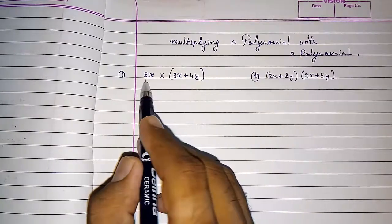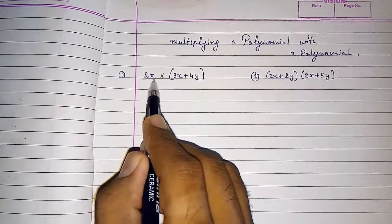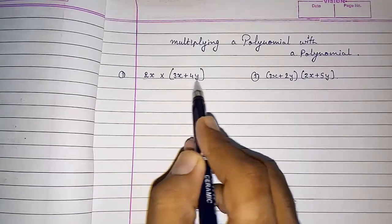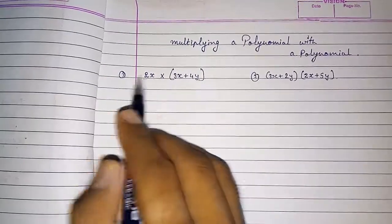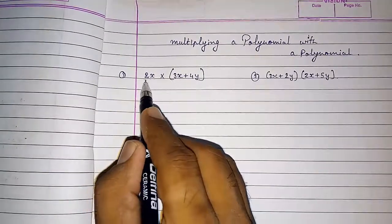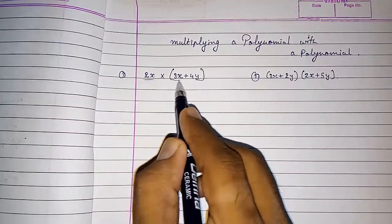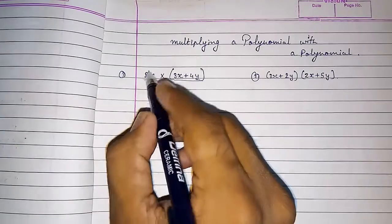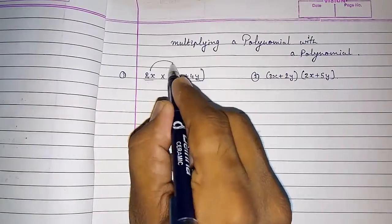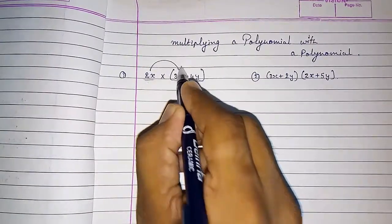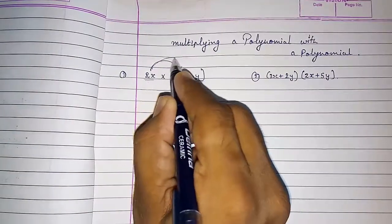Then I will show you a trinomial with a binomial. So first we start with a monomial with a binomial. When we have to multiply a monomial with a binomial, we have to multiply this with both the numbers.